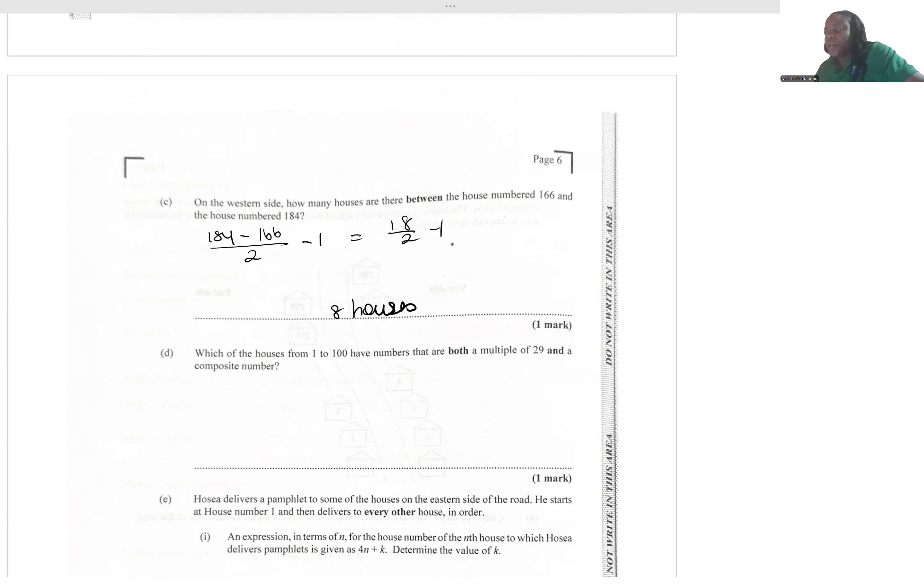Which of the houses from 1 to 100 have numbers that are both a multiple of 29 and a composite number? First, let's look at the multiples of 29. Multiples, think multiply. When I multiply 29 by 1, by 2, by 3, what is the product? So 29 by 1 gives me 29, 29 by 2 gives me 58, 29 by 3 is 87.